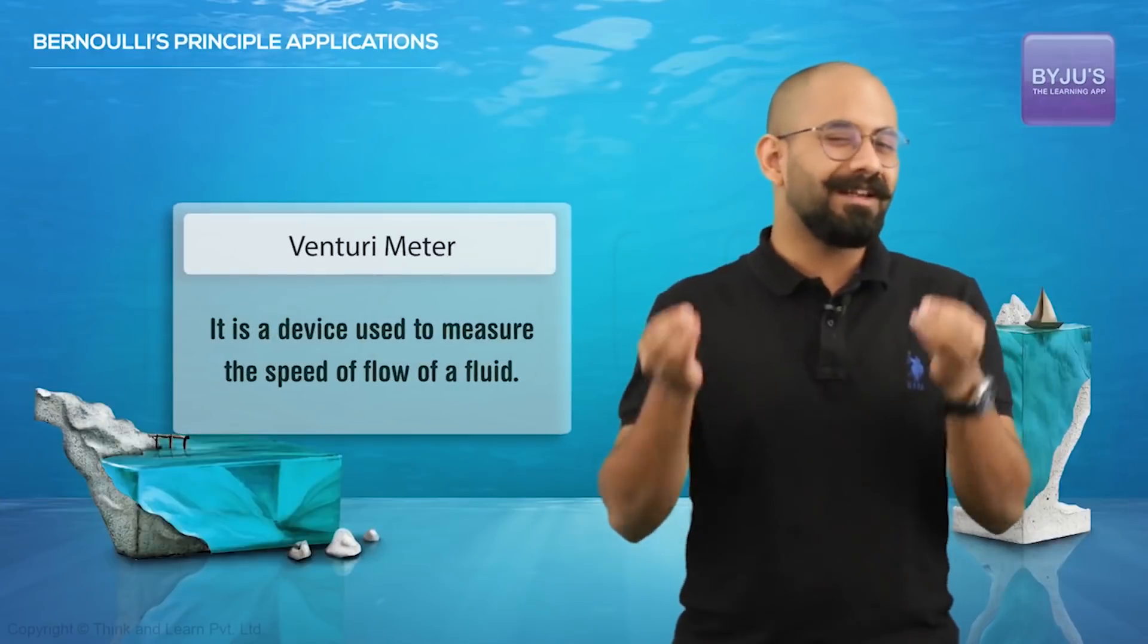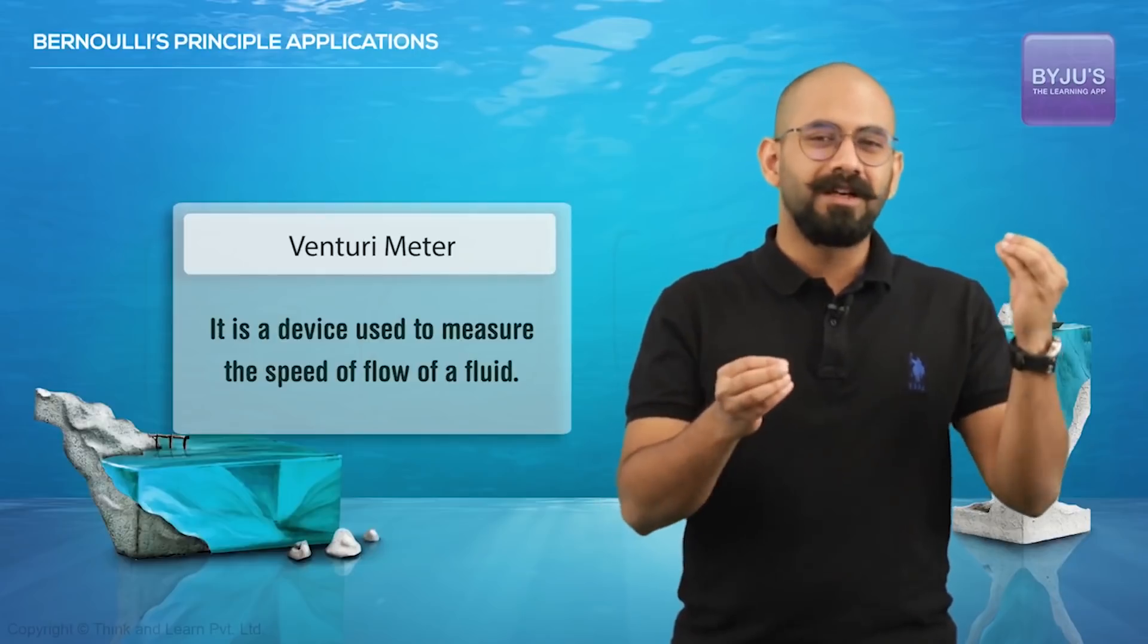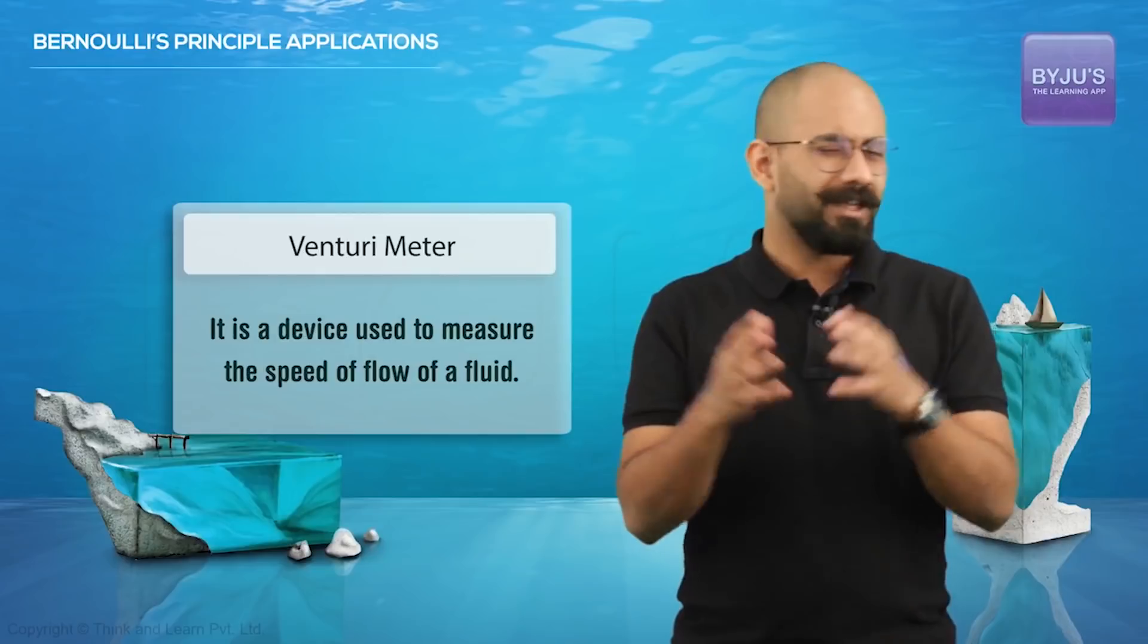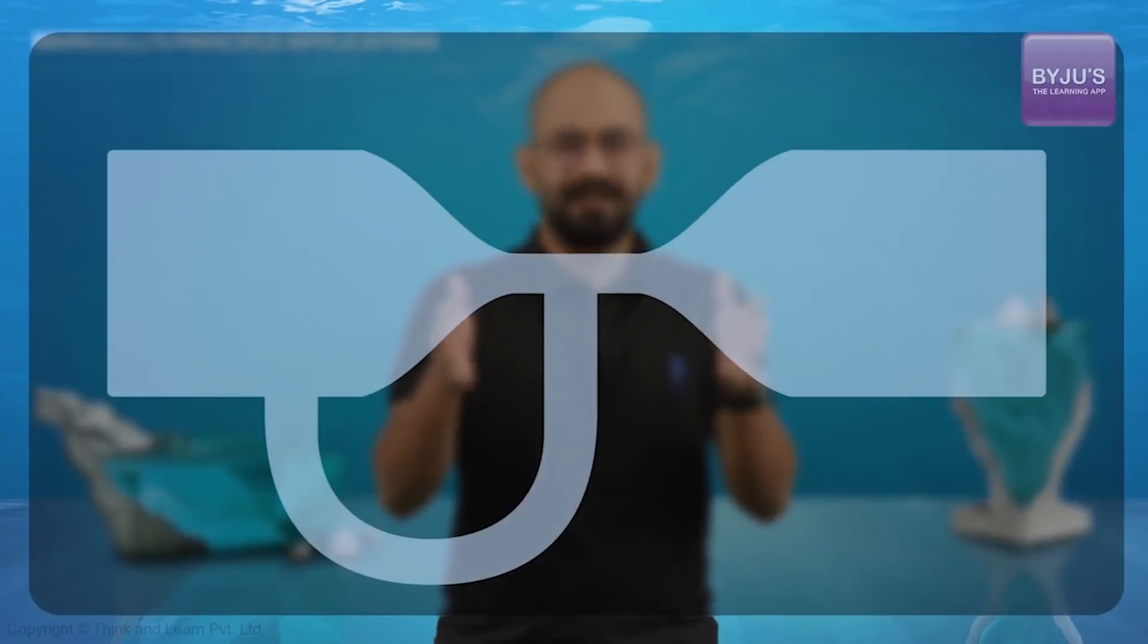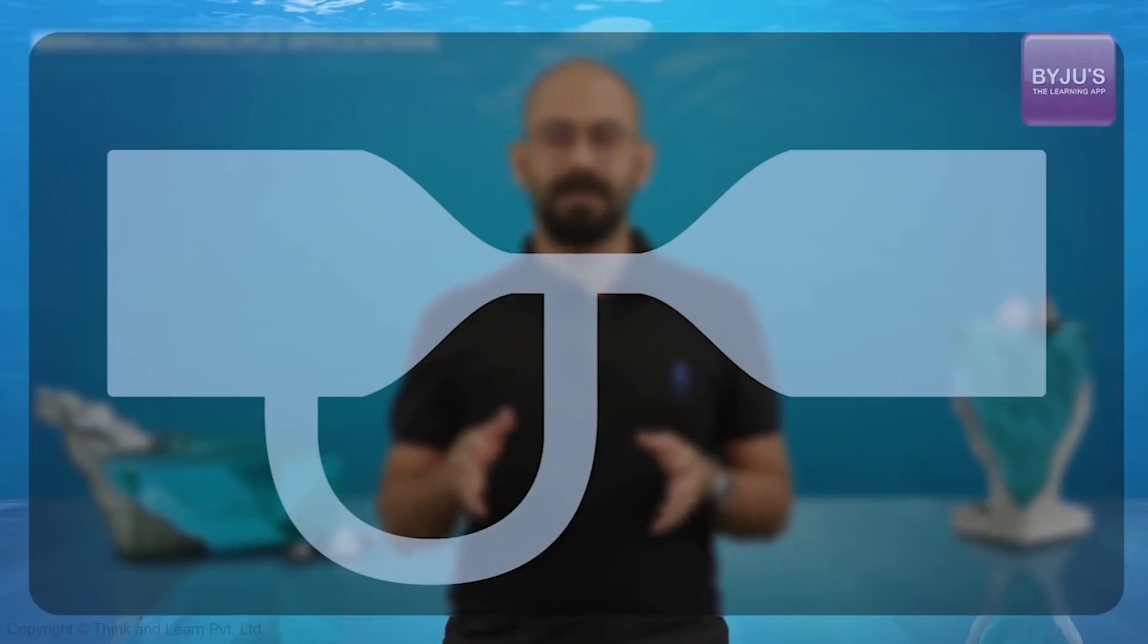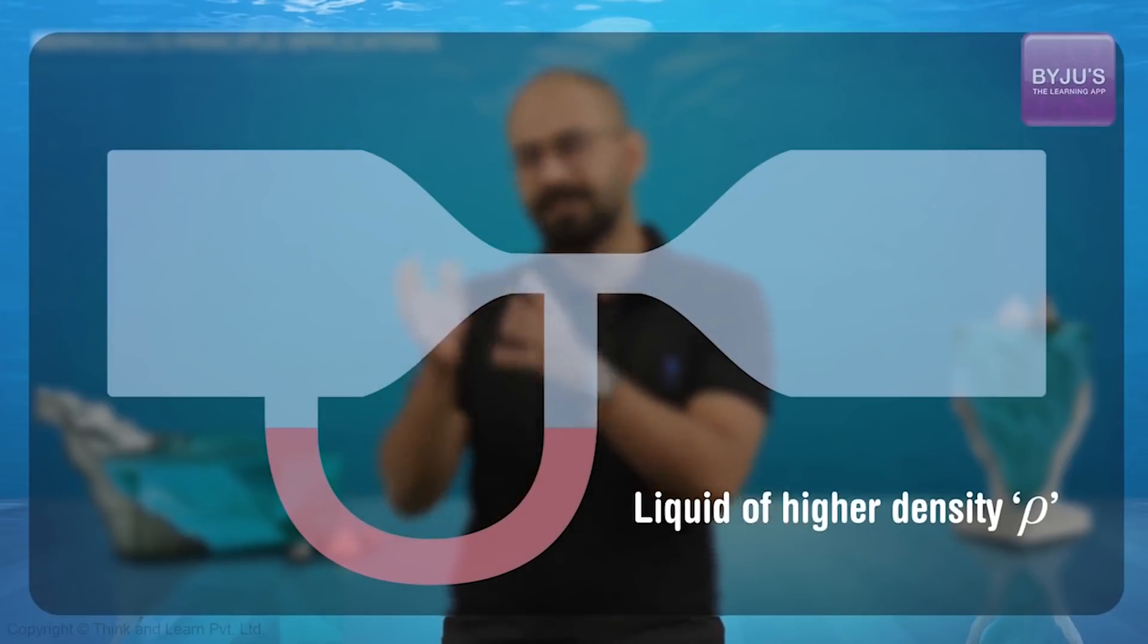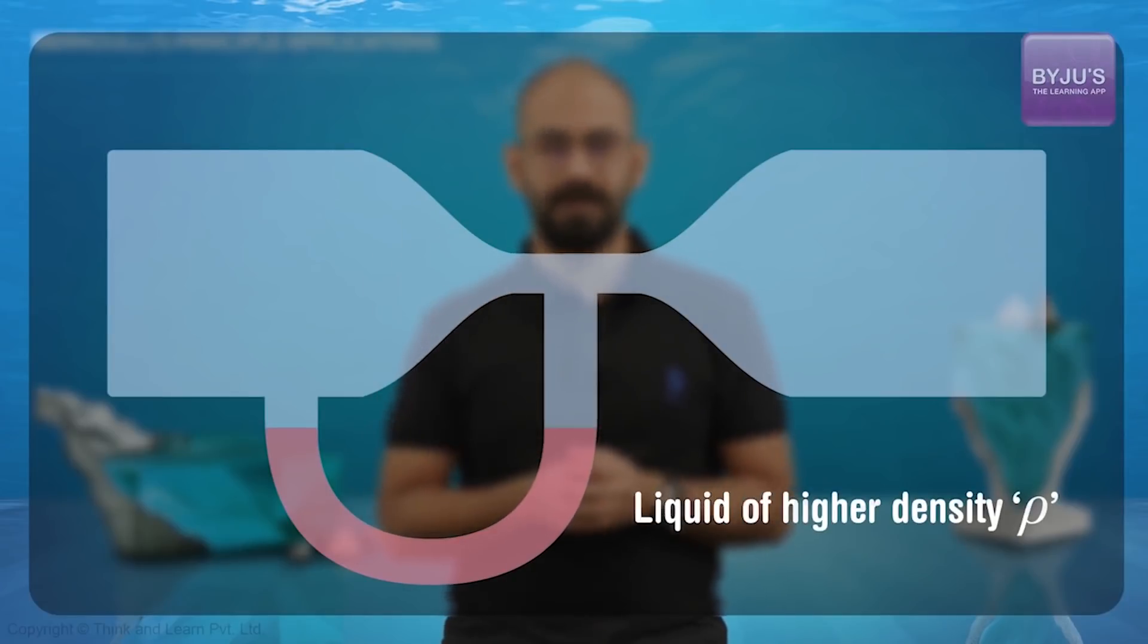Now, the Venturi meter is basically a device that's used to measure the speed of flow of a fluid. Now, how does it work? It's fairly simple. It's exactly the same setup and you just add a U-tube to the bottom and fill it with an incompressible liquid of high density rho. Let's say the density of that liquid is rho.